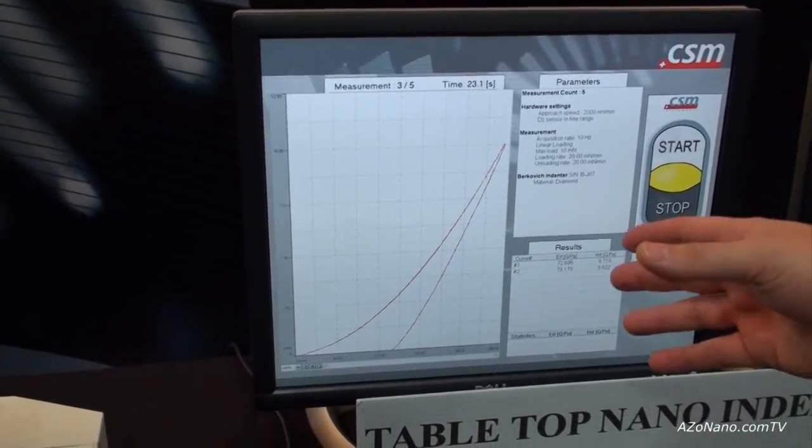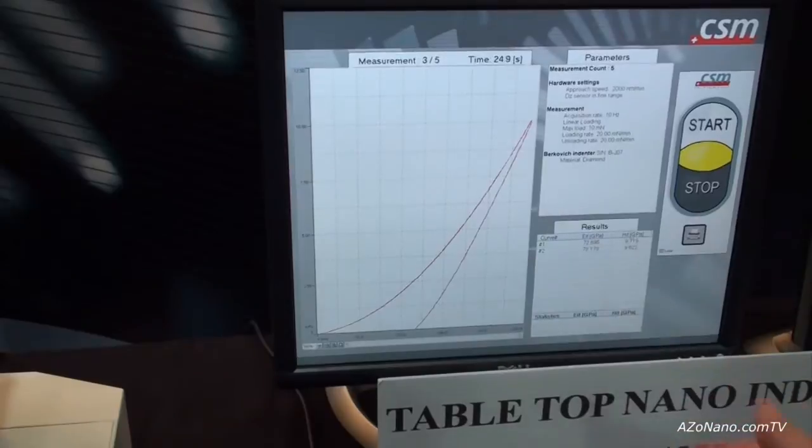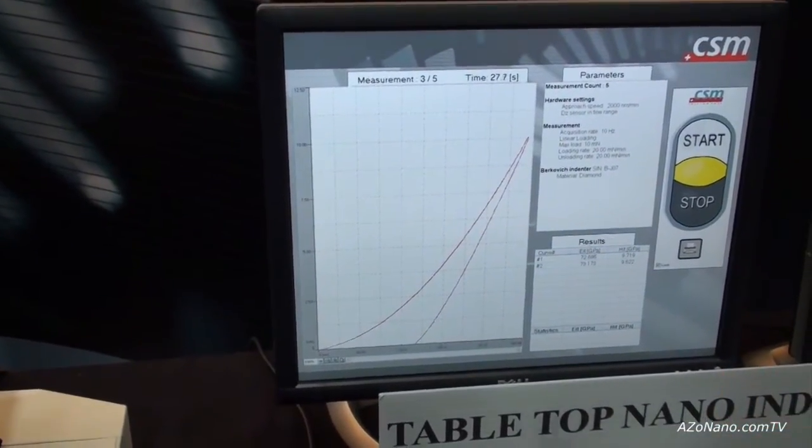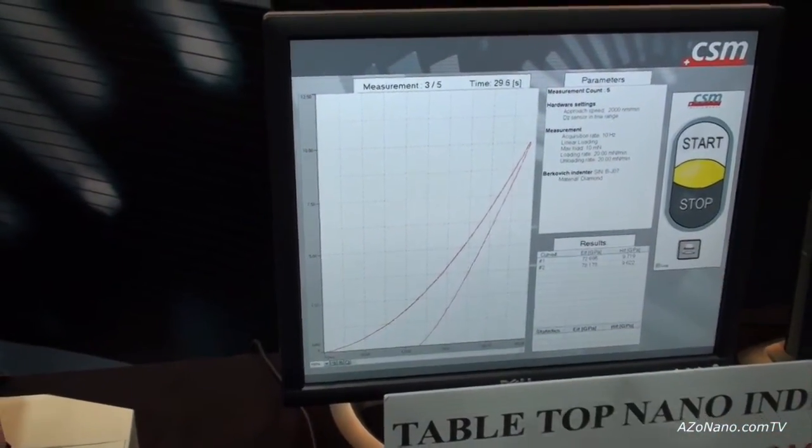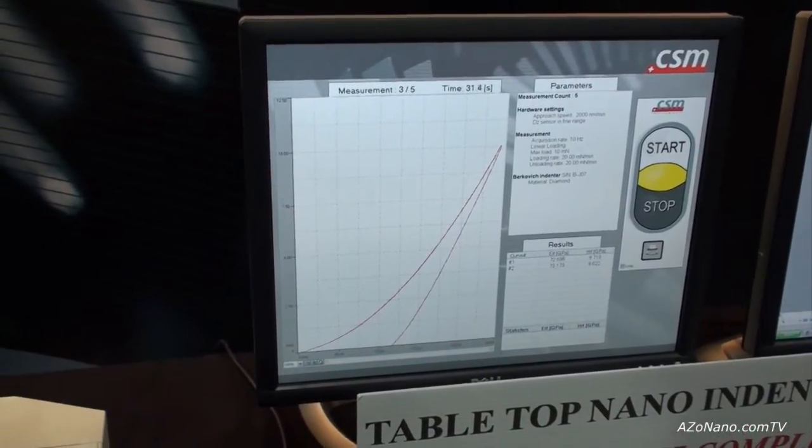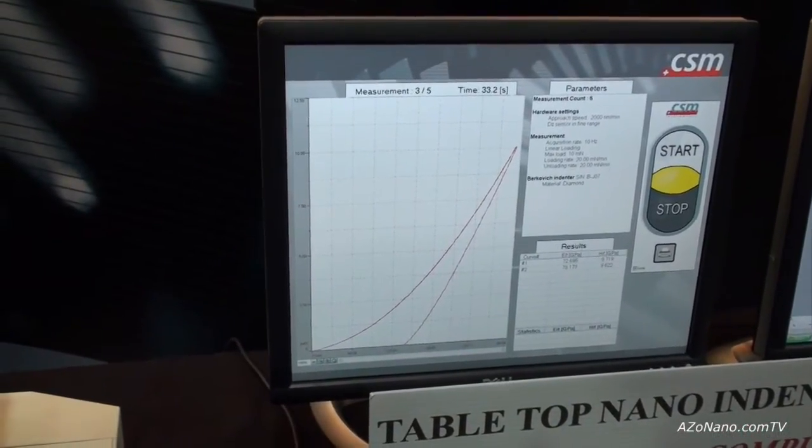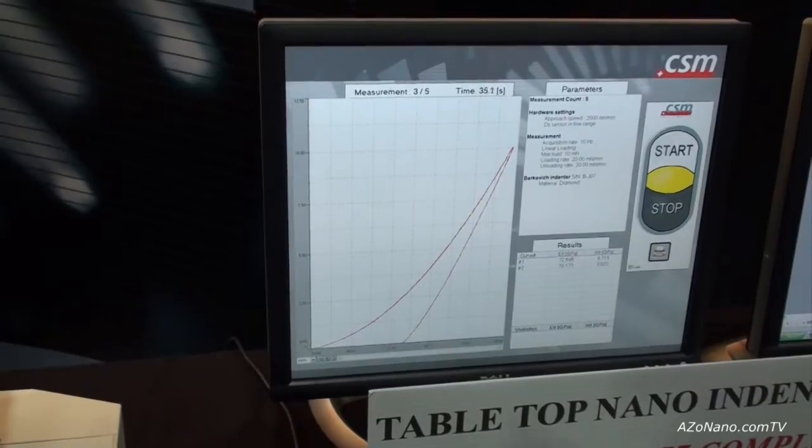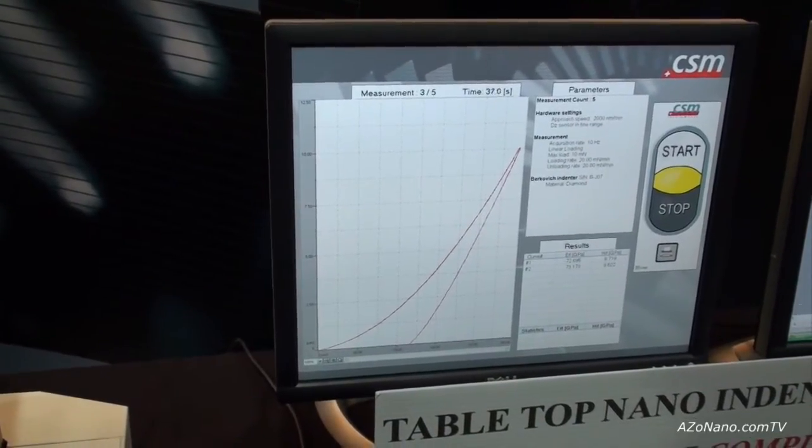What we can see here on the screen is a typical load depth curve. This machine can be upgraded with optical components such as a microscope. It can also be kept in its most standard form which is very cheap and it just makes a single or a line of indentations. So, it's a quality control tool.